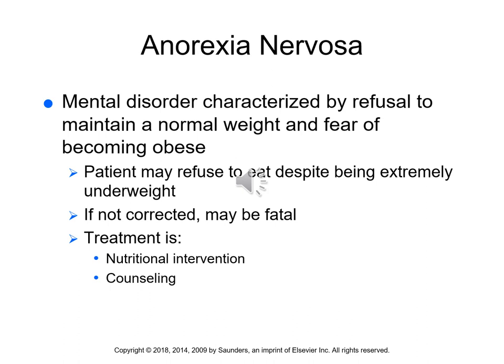Anorexia nervosa is a mental disorder in which individuals refuse to eat due to a fear of being obese, even though they may be extremely underweight. They are not taking in enough calories or nutrients and are likely malnourished. If not corrected, this can be fatal. Treatment includes some type of nutrition intervention — tube feeding or TPN — as well as behavioral counseling and behavioral modification. This requires collaboration between the patient, their family, physician, nurse, dietitian, and a mental health professional.